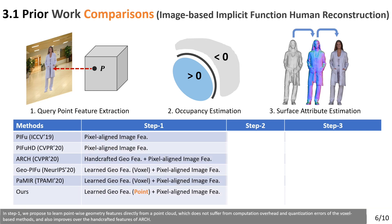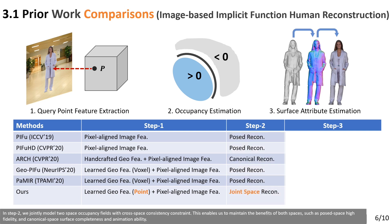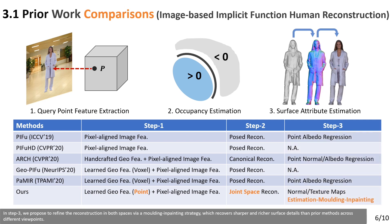In step 1, we propose to learn point-wise geometry features directly from a point cloud, which does not suffer from computation overhead and quantization errors of voxel-based methods, and also improves over the hand-crafted features of ARC. In step 2, we jointly model two space occupancy fields with a cross-space consistency constraint, enabling us to maintain the benefits of both spaces, such as pose-space high-fidelity and canonical space surface completeness and animation ability. In step 3, we propose to refine the reconstruction in both spaces via an inpainting strategy, which recovers sharper and richer surface details than prior methods across different viewpoints.